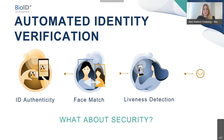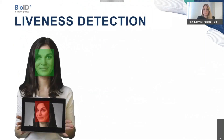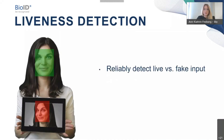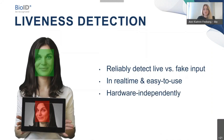This brings me to the main topic: liveness detection in the context of remote identity verification. First, it has to reliably detect live versus fake input. But it also has to do that in real time, be easy to use, and work hardware-independently — because we never know which device citizens are using, what scenario they're in, or how much experience they have. The algorithm needs to work with any device, any camera, any lighting, and still be very reliable in deciding whether images came from a live person.